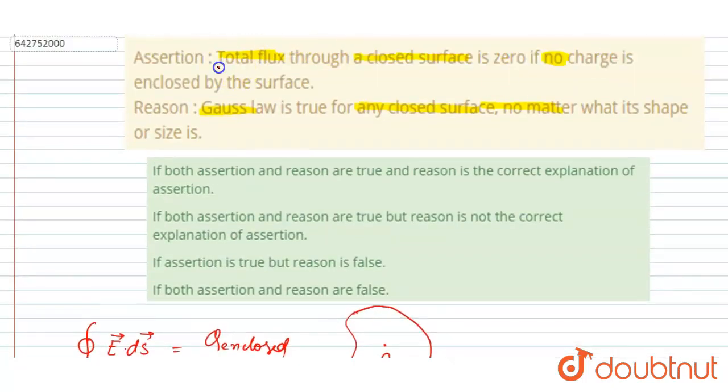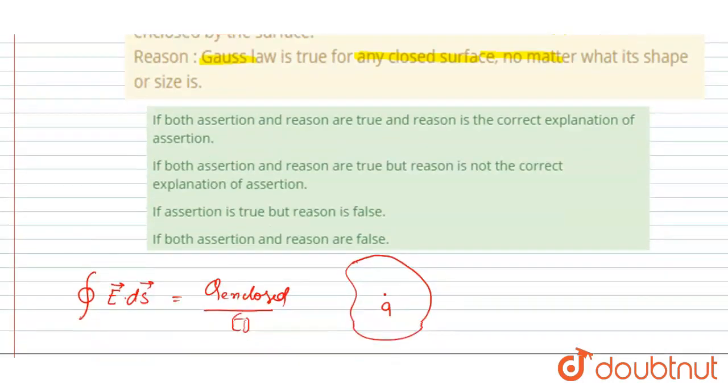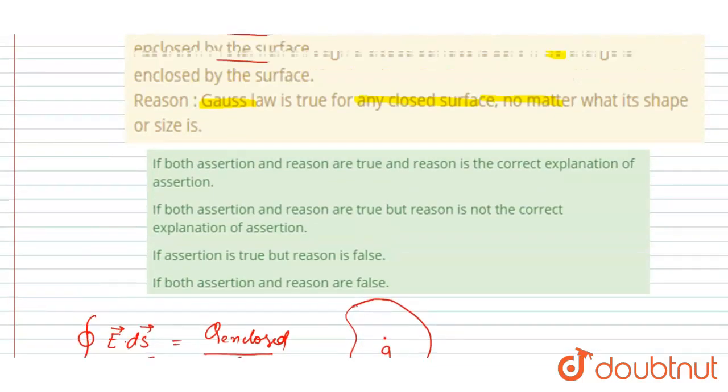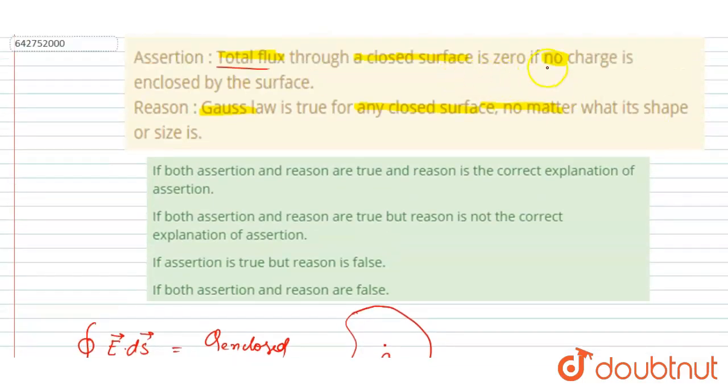In this question it is said that the total flux, which is this E.dS for all the surface, is equals to net charge enclosed. So here it is said that if there is no charge enclosed, then total flux will be zero. So this statement is completely true. And if you see the reason,